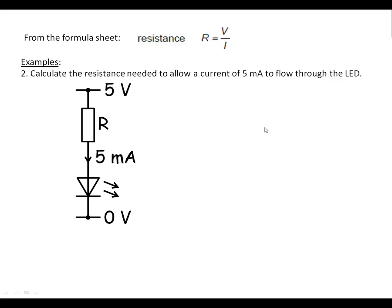Second example. We're going to calculate what resistor we need if we're going to limit the current going through the LED to 5 milliamps. What do we know? Well, it's an LED, and unless it says otherwise on the exam paper, we assume 2 volts across an LED.